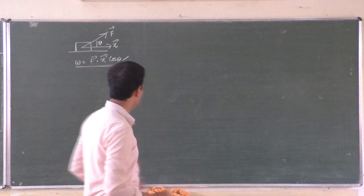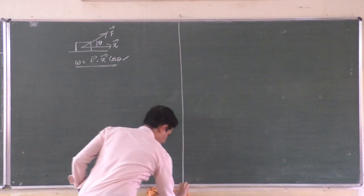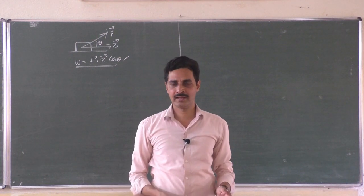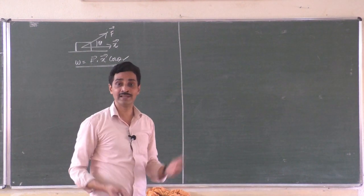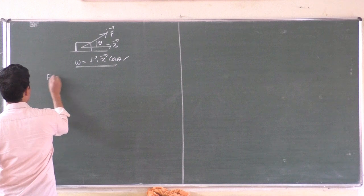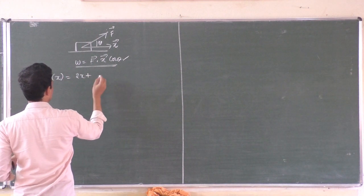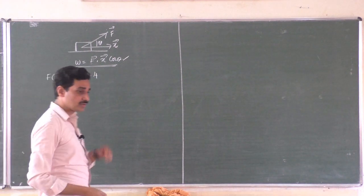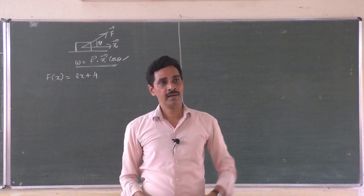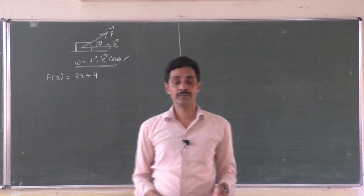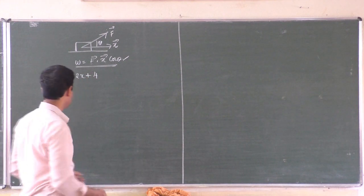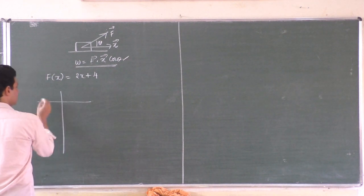If you think of a force which is a function of distance, there are two types. One is a uniform force, and another where the force varies linearly with displacement. For example, if force is a function of x and it is given by 2x plus 4, then at different positions x, the force values are different. The question is: what is the work done for a given displacement?